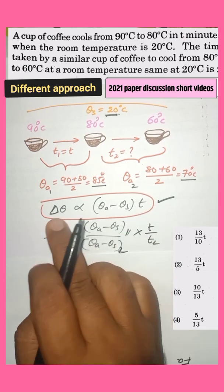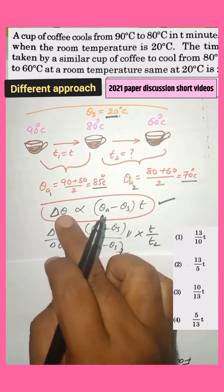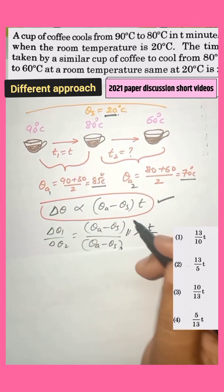Our basic formula is change in the temperature or decrease in the temperature is directly proportional to average temperature minus temperature of surroundings. And it's also directly proportional to time taken to decrease the temperature here.